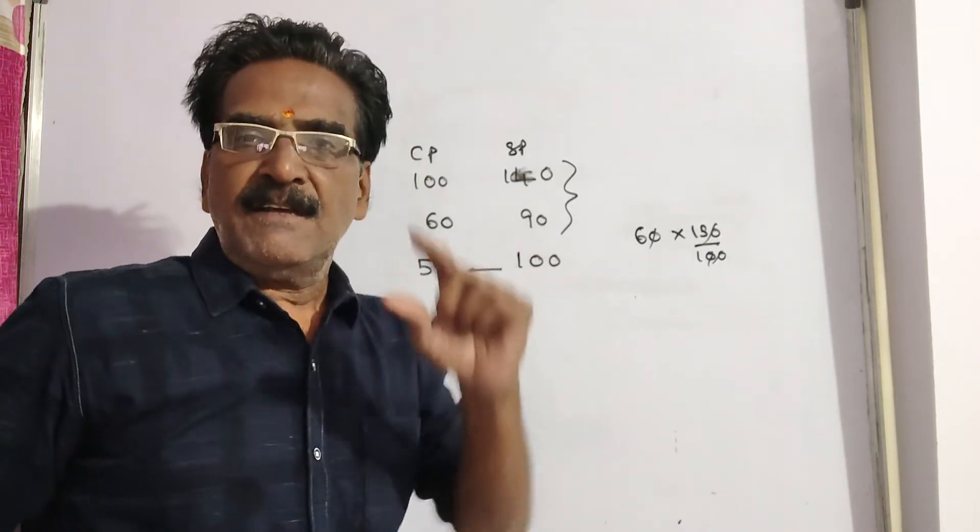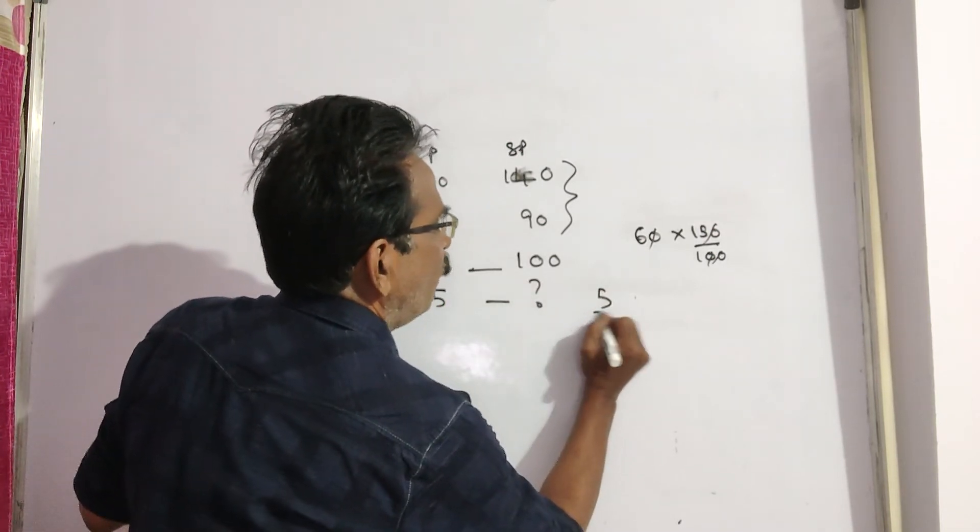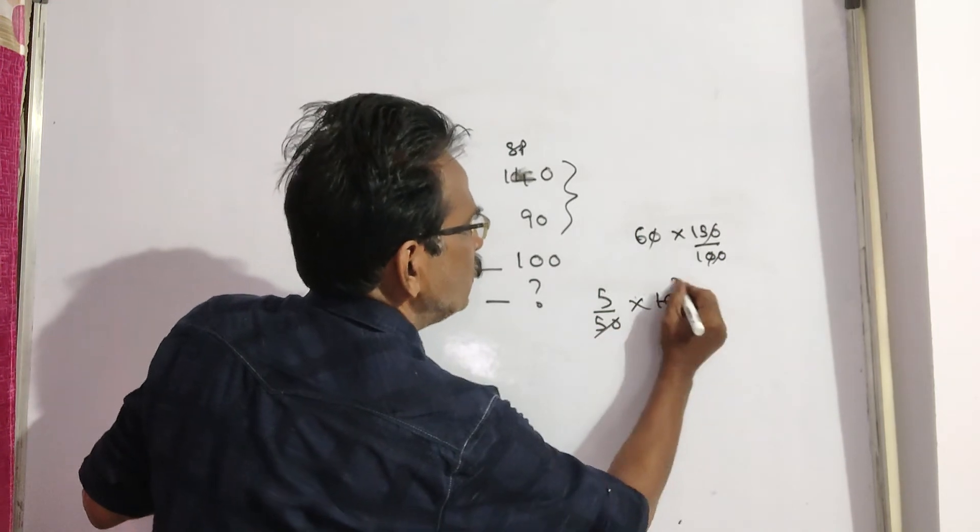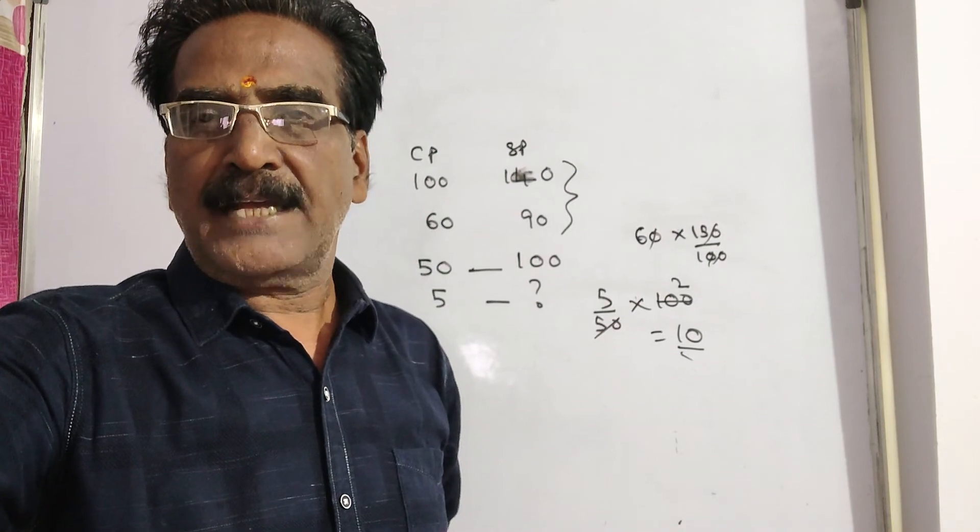It is given that 5 rupees less. If 5 rupees less, then the cost price will be 5 by 50 into 100, that is 10 rupees is your answer friends. Thank you.